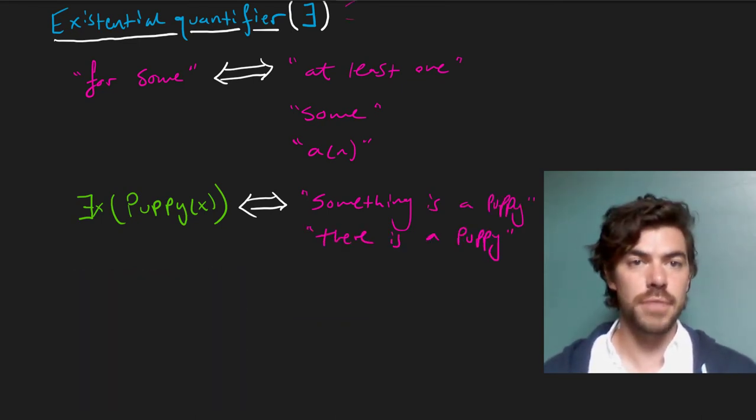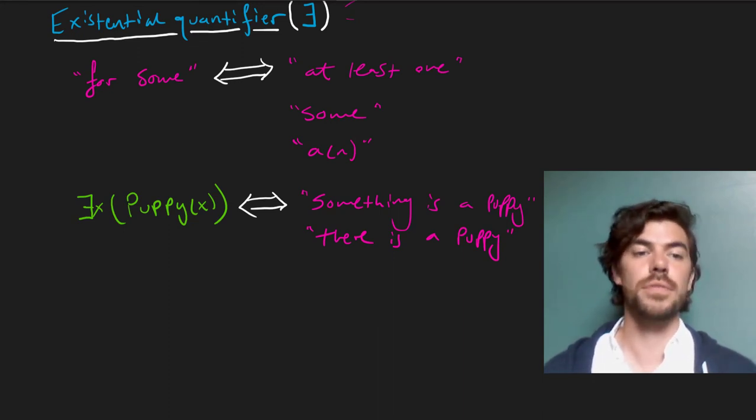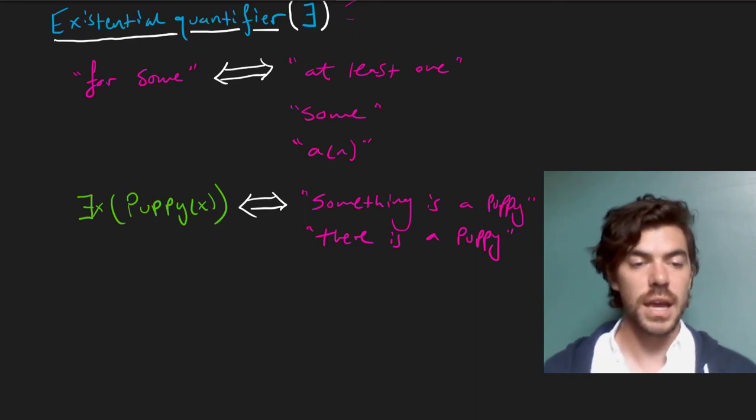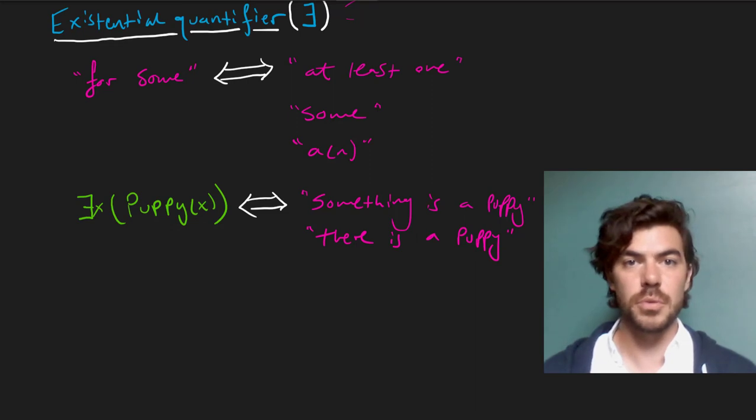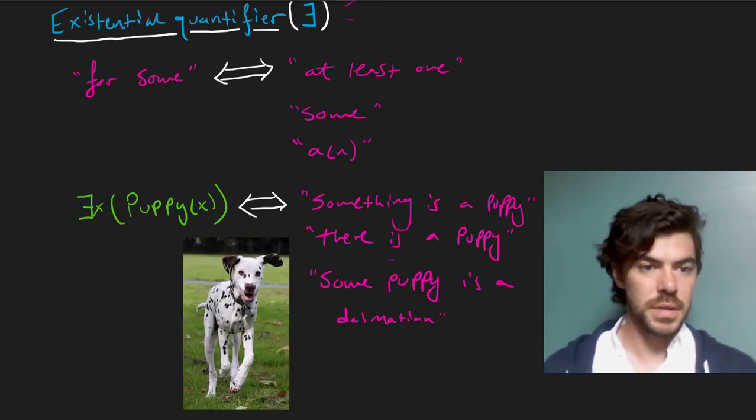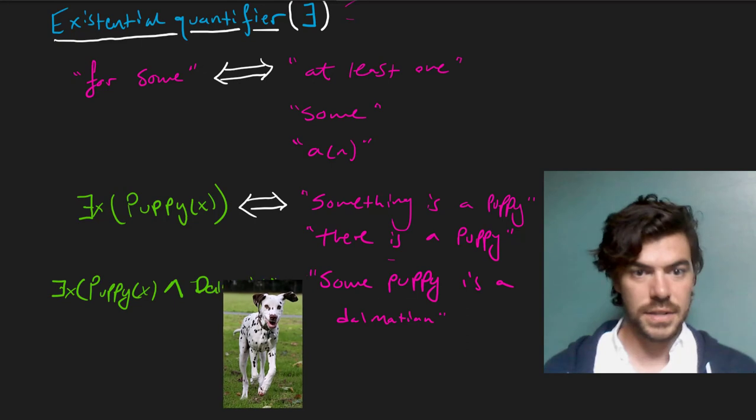Now, unlike with the universal quantifier using conditionals, with the existential quantifier, if we want to say more than one thing about an object, we do so with conjunctions. And we're going to see how this works in greater detail later on. For instance, suppose we wanted to say some puppy is a Dalmatian. We would express this as there exists an x such that x is a puppy and x is a Dalmatian.